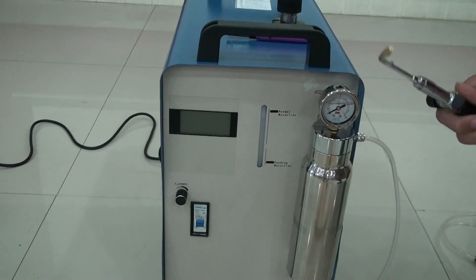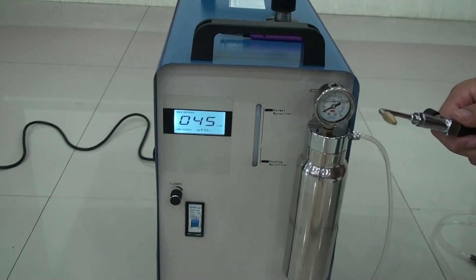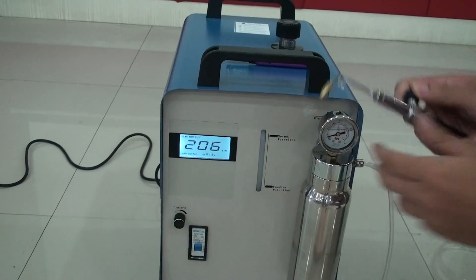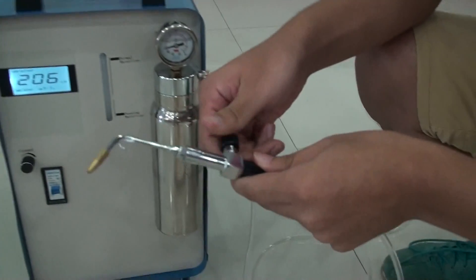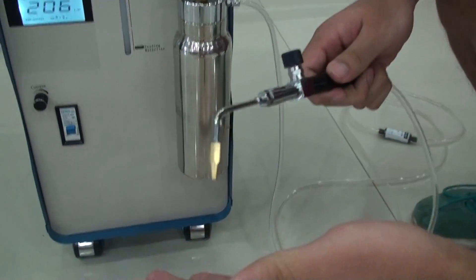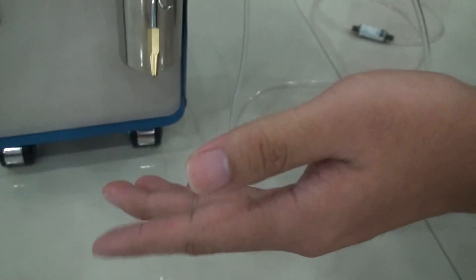Our machine's gas output ranges from 0 to 200. Then you have to turn on the flame torch. You can feel the Oxyhydrogen gas coming out.